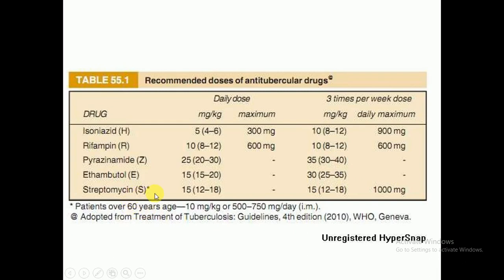Streptomycin, represented by S, is given at 12 to 18 mg/kg body weight (average 15 mg/kg) with a maximum dose of 1000 mg daily. For patients over 60 years, the dose is 10 mg/kg or 500 to 750 mg intramuscularly. This dosing information is adopted from the Treatment of Tuberculosis Guidelines, 4th edition, WHO Geneva.